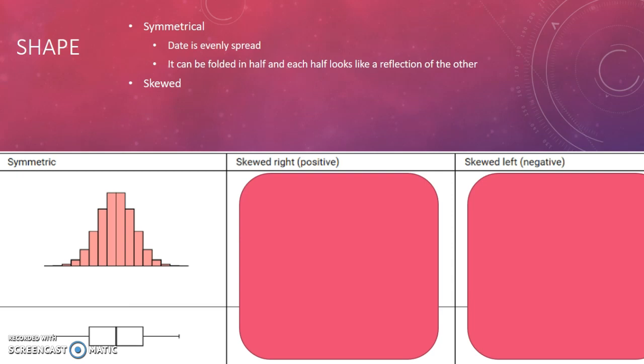In symmetrical data, the data is evenly spread. If you were to take a diagrammatic representation of that data and fold it in half, each half would look like a reflection of the other.